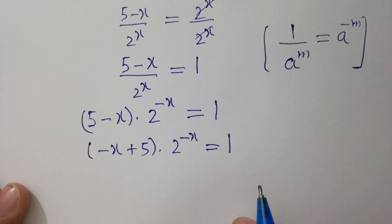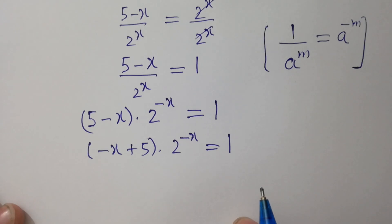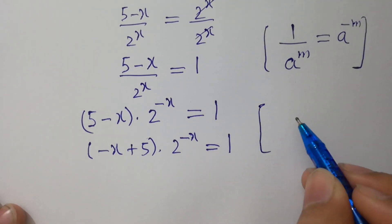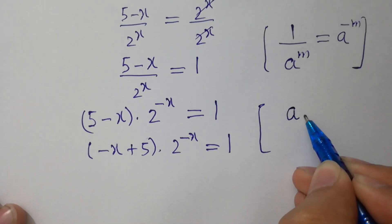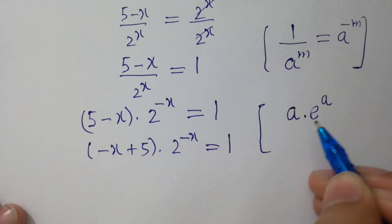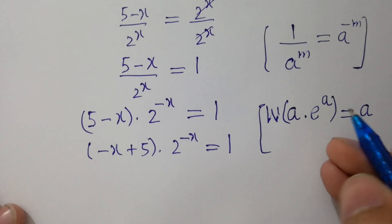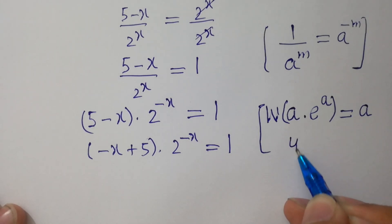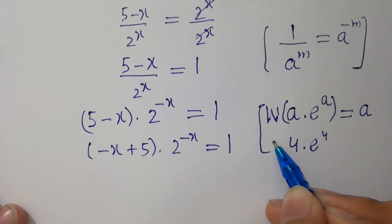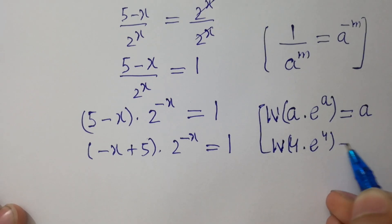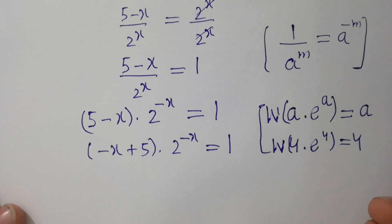I am doing these steps because I am going to apply the Lambert W function here. In this video, I am going to share a simple method to understand the Lambert W function, which is very simple and easy. If we have an expression a times e to the power a and apply the Lambert W function, it will equal a. For example, W of 4 times e to the power 4 equals 4. I hope you understand — I will apply this to solve the question faster.